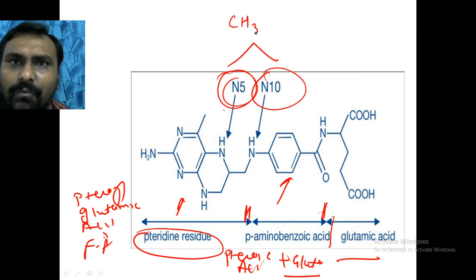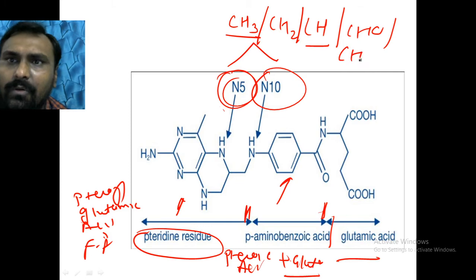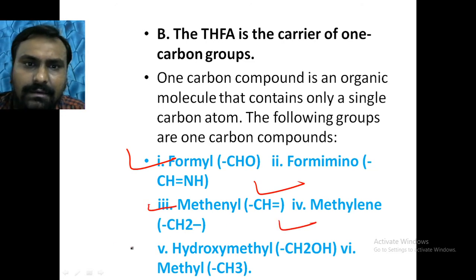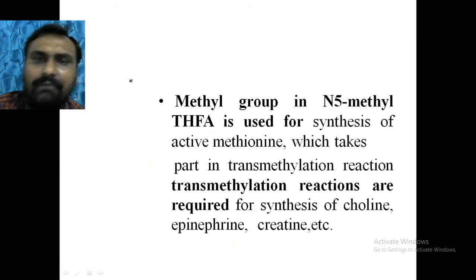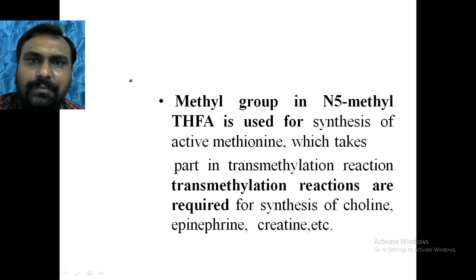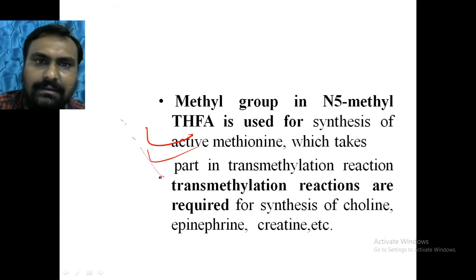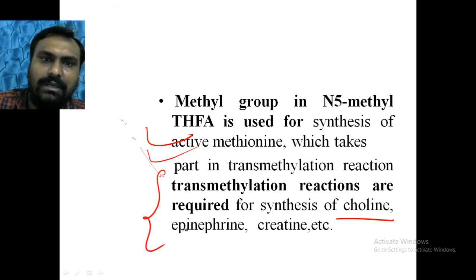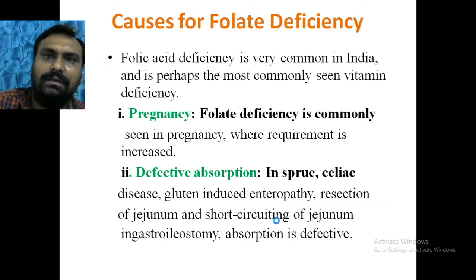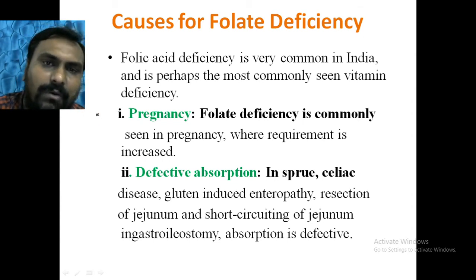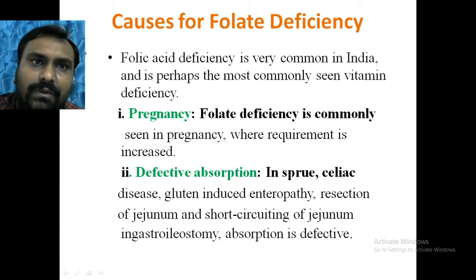The active tetrahydrofolate carries a one-carbon group at N5 or N10 — either methyl, methylene, methenyl, formyl, or formamino. This active form is used for synthesis of active methionine, transmethylation reactions, and synthesis of epinephrine from norepinephrine, creatine from guanidinoacetate. You can also refer to my separate video on one-carbon metabolism for more detail.